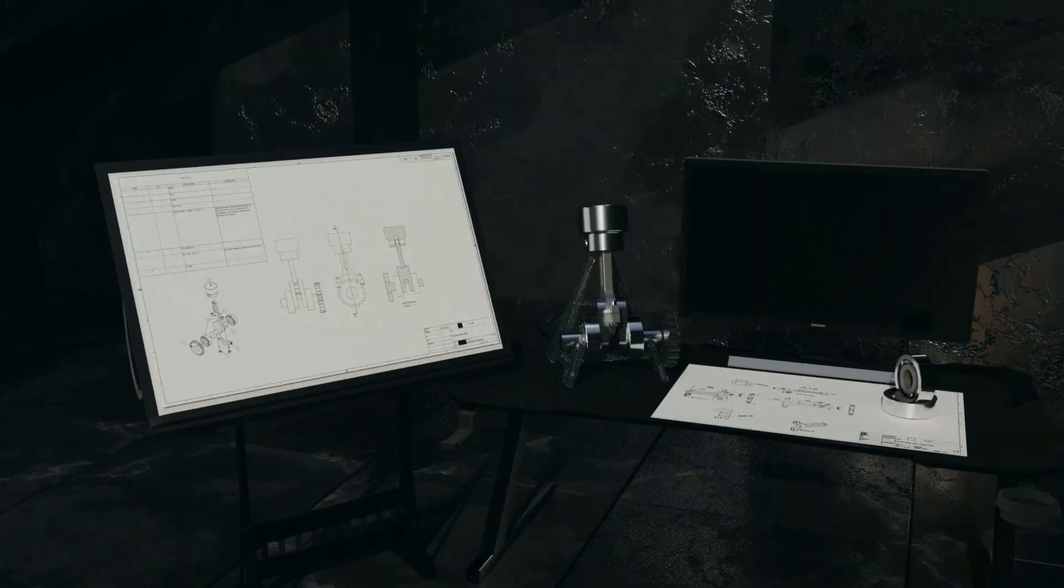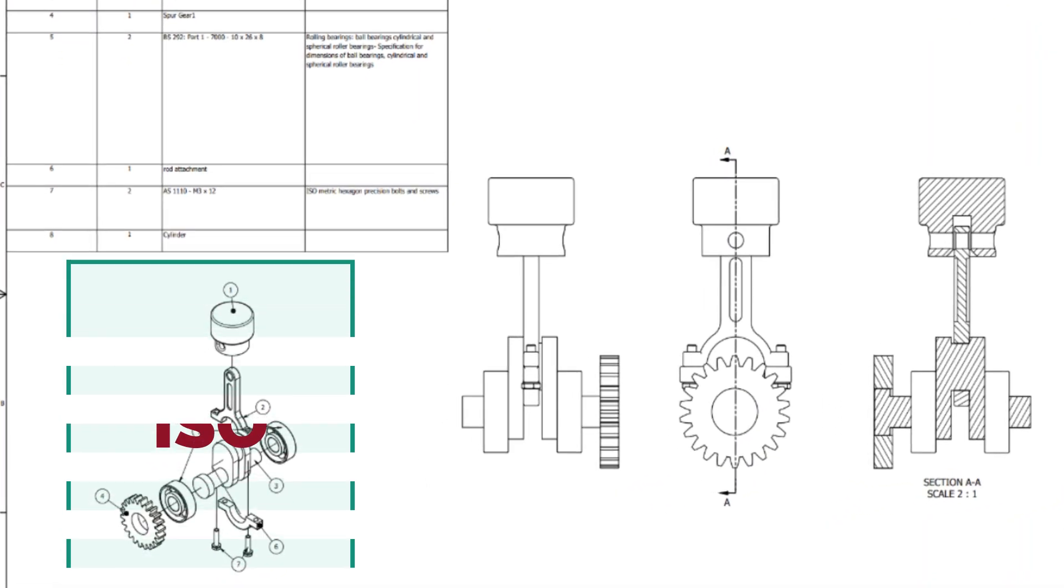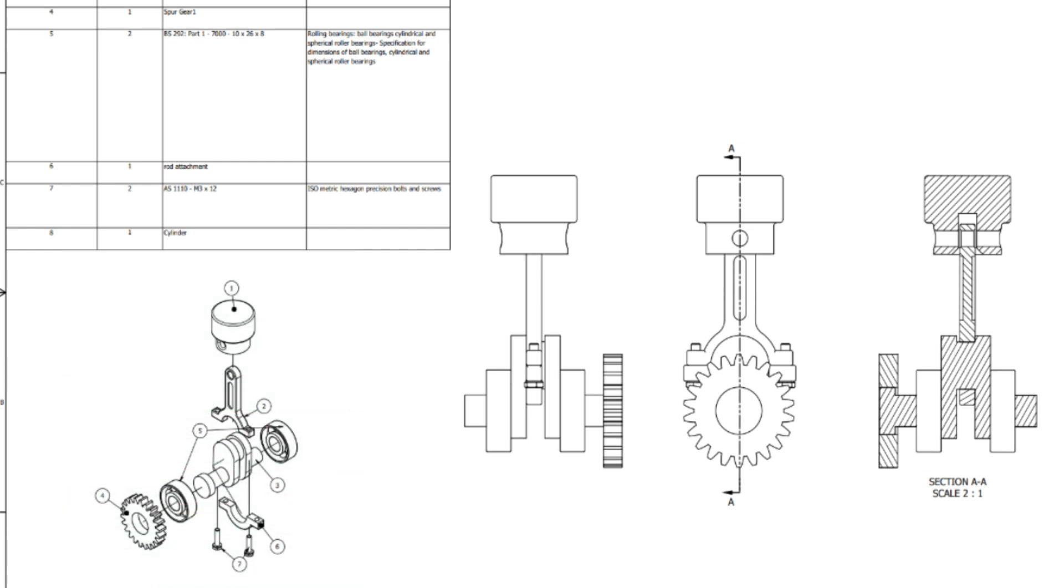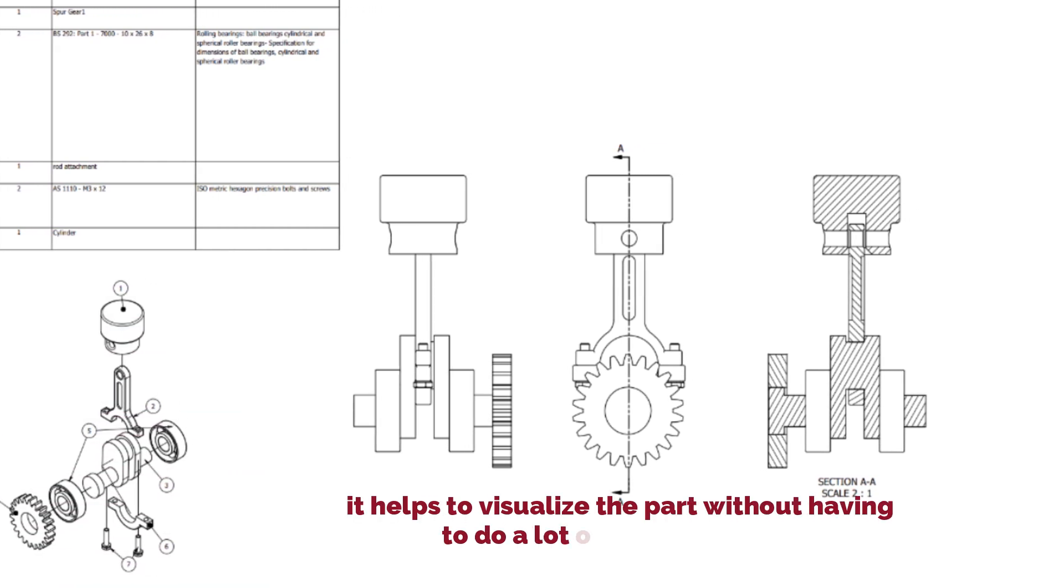Although it's not a must to have an isometric view on the drawing, almost all drawings contain an isometric view. And this is because it helps to visualize the part without having to do a lot of mental work by looking at the orthographic projection views.